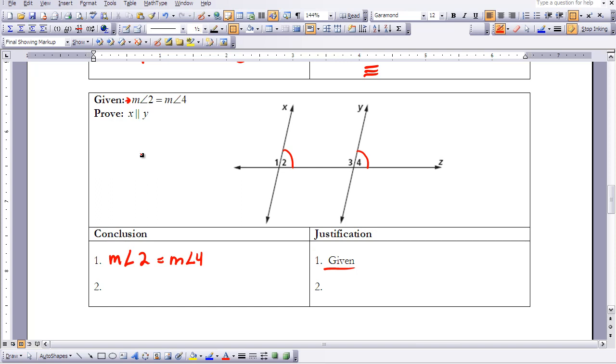The next thing I want to do is prove that X is parallel to Y, and I can do that already. Hopefully you've identified that these are corresponding angles. So we can use the corresponding angles postulate to state that those lines are parallel.